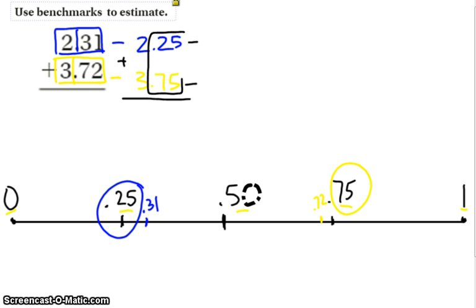So, 75 cents plus 25 cents is a dollar. So, 1 plus 2 is 3 plus 3 more is 6.